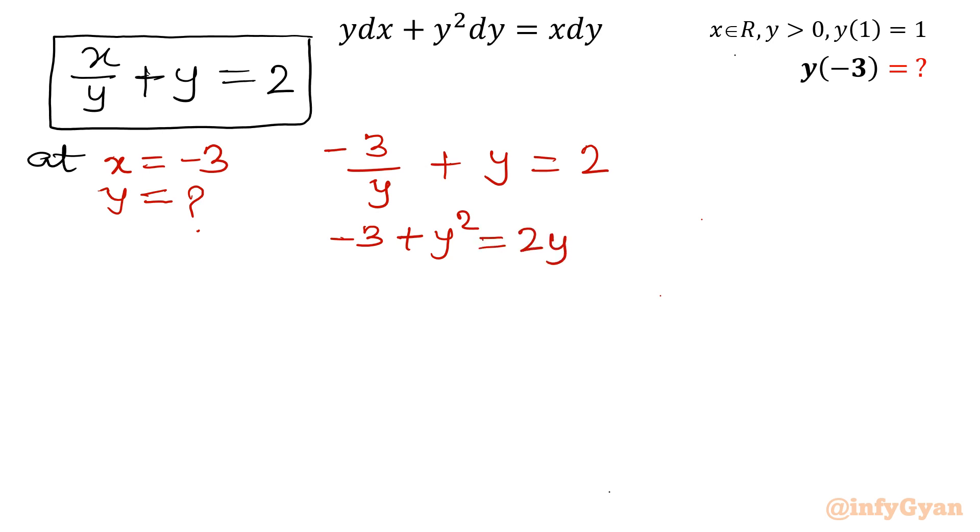Take all the terms to the left. So I will write y squared minus 2y minus 3 equals 0. Either left or right, it does not matter because that will only create a minus sign extra. So the right-hand side is 0, so that will merge in that. So y squared minus 2y minus 3 equals 0.